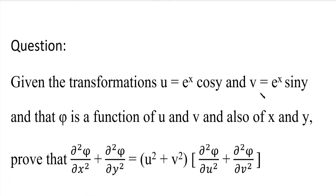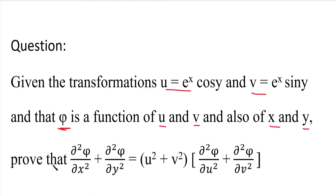In the question, we have two functions u and v in x and y. Pi is a function of u and v, but u and v are functions of x and y. So we need to prove that dou square pi by dou x square plus dou square pi by dou y square equals u square plus v square, the whole into dou square pi by dou u square plus dou square pi by dou v square.